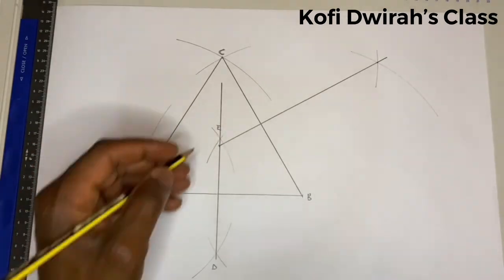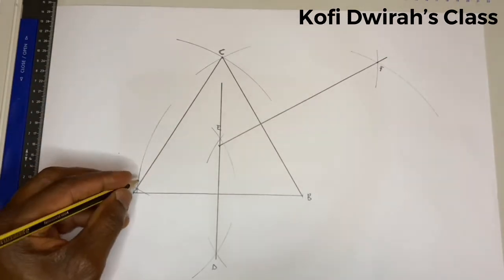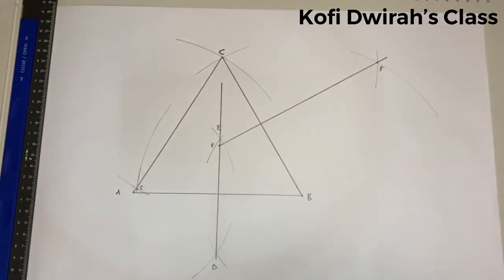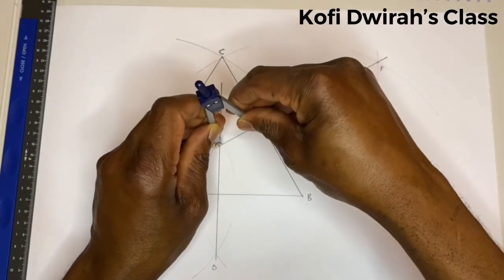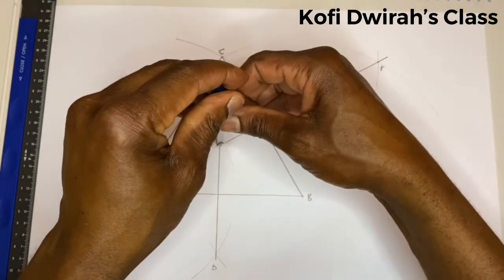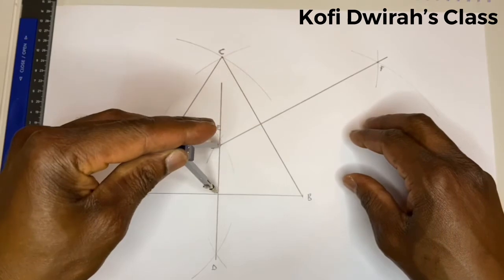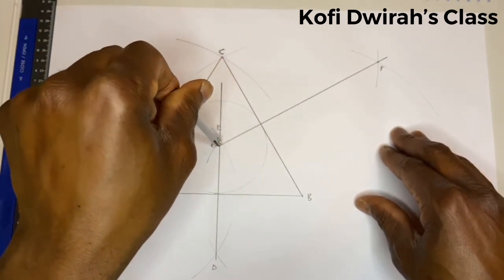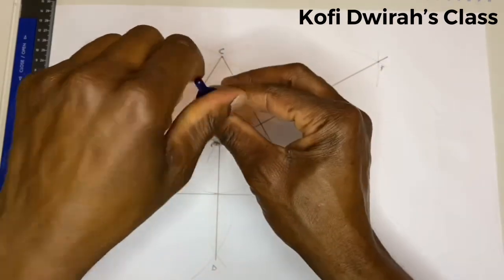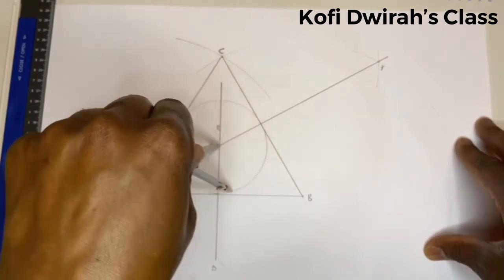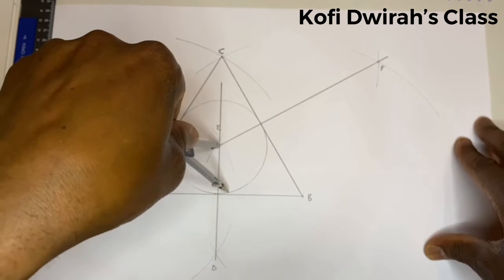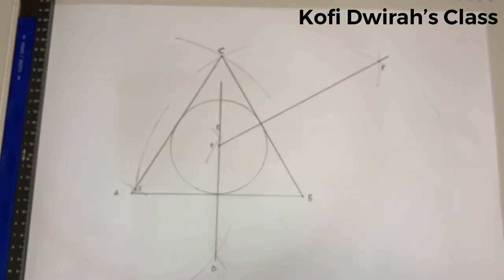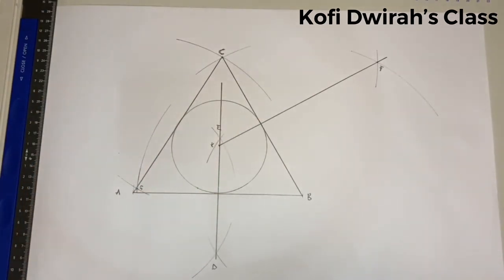So we have points E, F, and G. We have this intersection point to be K. Then at point K, you open a compass to the side of the triangle and draw your circle — draw your circle to touch all three sides of the triangle.